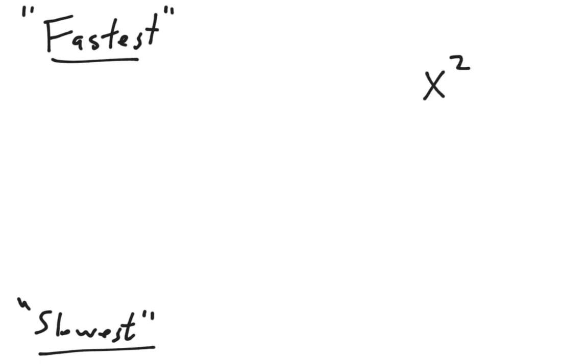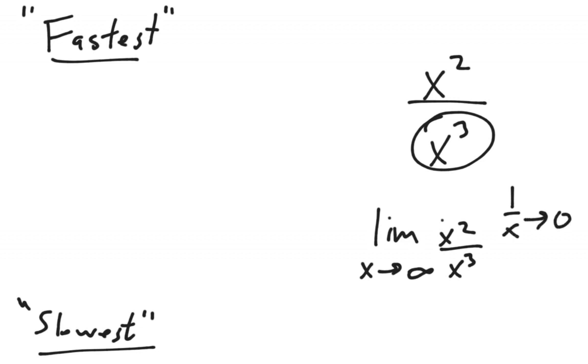For example, if I compare x squared and x cubed, clearly x cubed is going to get to infinity faster than x squared. And one way we can see this is by taking the limit as x approaches infinity of x squared over x cubed. This simplifies to being 1 over x, and that will go to 0. So even though the top and the bottom both go to infinity, because the bottom gets there faster, our limit ends up being 0.